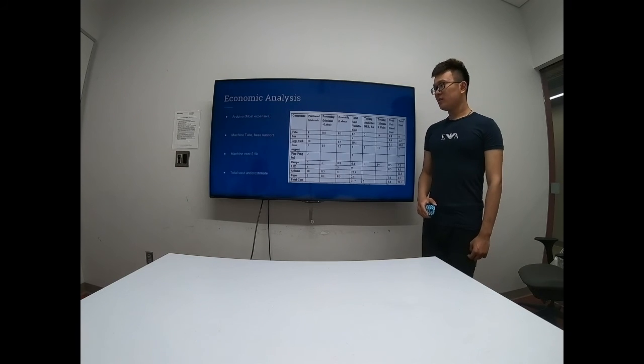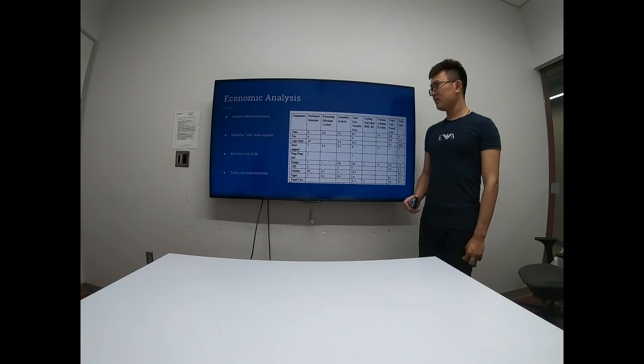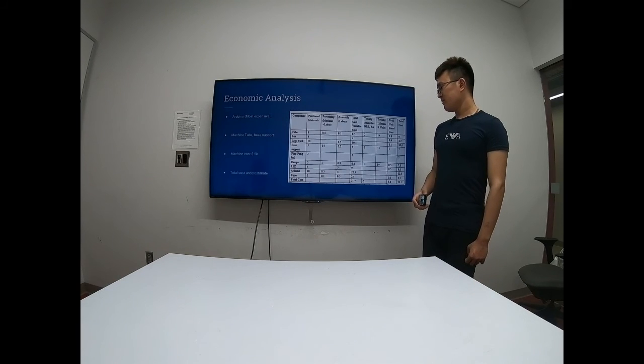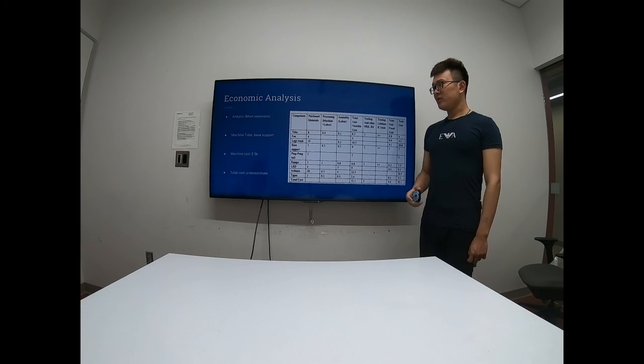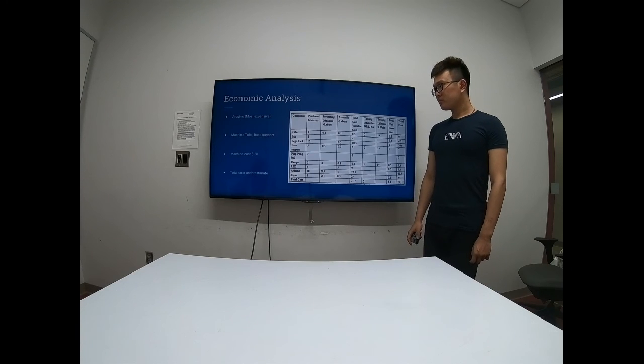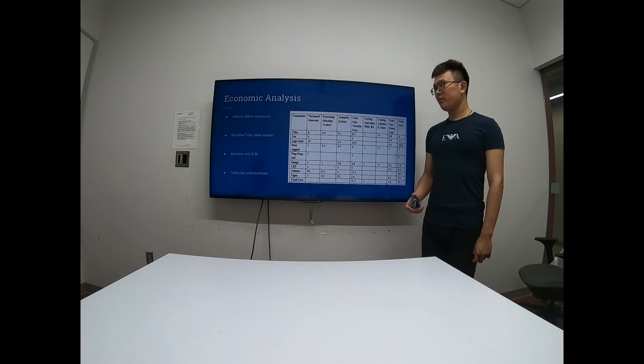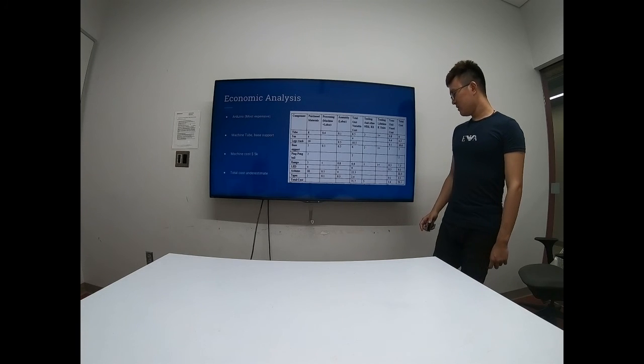Our team also decided to make the tube base support and the ramp by ourselves, and we are going to purchase machines which cost $5,000. The reason is that the tube and base support and the ramp are basically made of the same materials. These $5,000 also included in the first, as what I mentioned before, in the initial $10,000 investment.